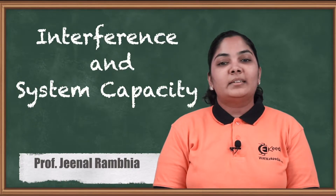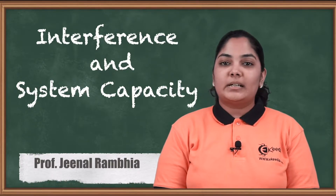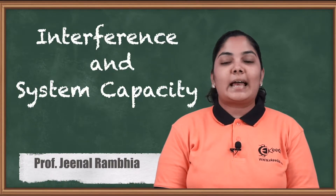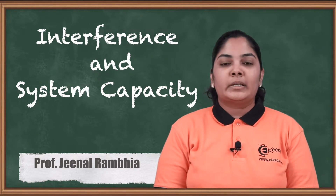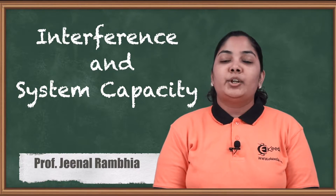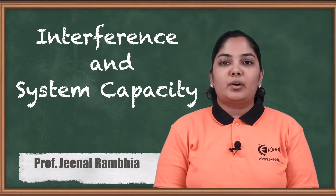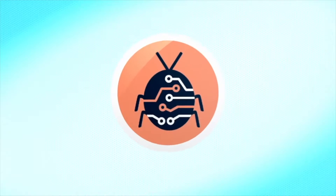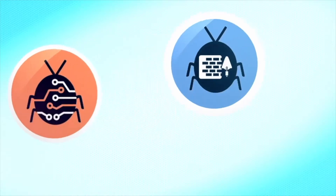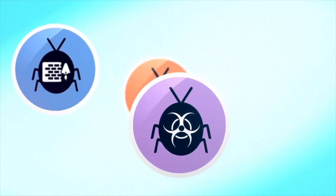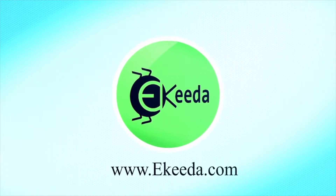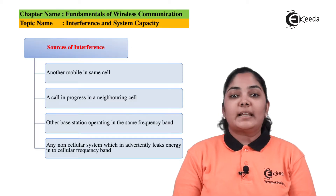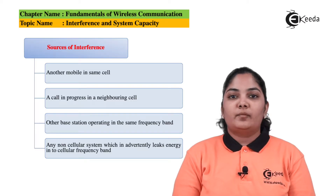Hello friends. In this video we'll understand about the interference and the system capacity of mobile communication systems — meaning, due to interference, we'll find out how the capacity of the system fluctuates. First, let us understand what are the sources of interference.